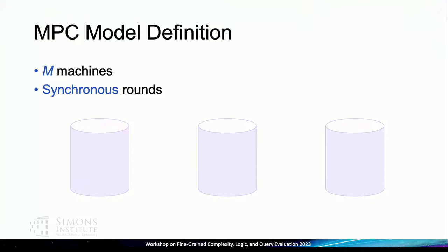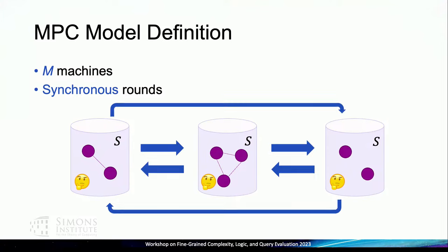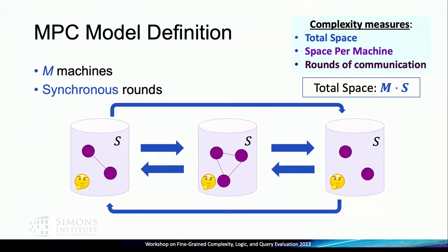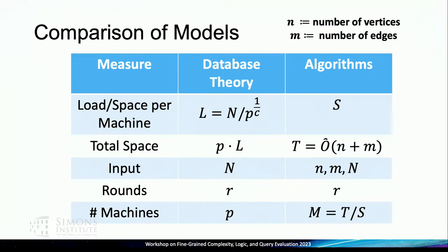Let me start with the definition of the MPC model I'll specifically be talking about in terms of graphs. This is a somewhat different model than what Paris and Shao talked about, but I'll discuss the similarities and differences. The MPC model I'll be talking about consists of M machines, and unlike the database model, we're considering synchronous rounds. We often have algorithms that take O(log log n) rounds, not just one or two rounds.